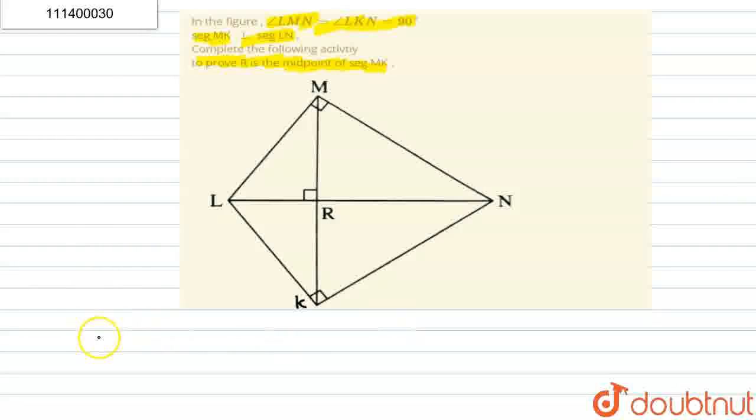In triangle LMN, angle LMN equals to 90 degree. So angle LMN equals to 90 degree. This is given.